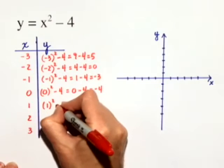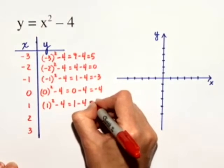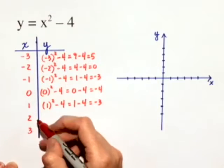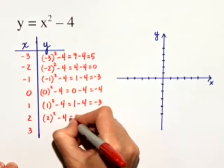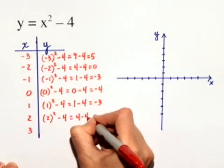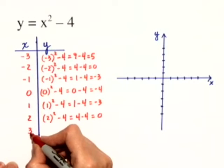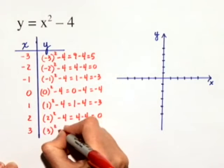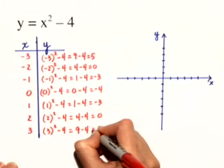We'll substitute 1 in for x, and we'll get 1 squared minus 4, which equals 1 minus 4, or negative 3. When we substitute 2 in for x, we'll get 2 squared minus 4, or 4 minus 4, which equals 0. And finally, when we substitute 3 in for x, we'll get 3 squared minus 4, which is just 9 minus 4, or 5.